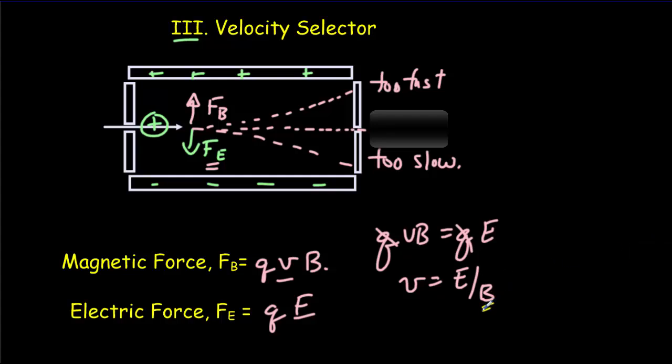Typically we hold the magnetic field constant and vary the electric field. We choose a value of the electric field to get lots of ions coming through the hole. We'll know the electric field because it equals the voltage across the plates divided by the distance between the plates.